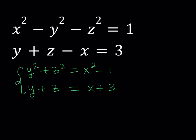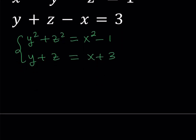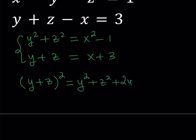Now we have a system of equations in y and z, treating x as a constant for simplicity. Because one equation is a sum of squares and the other is a sum, I'd like to square the second one. Squaring y plus z gives me y squared plus z squared plus 2yz. And since y plus z equals x plus 3, squaring that side gives x plus 3 quantity squared.